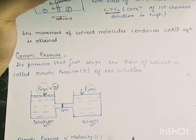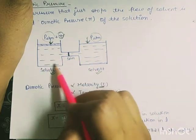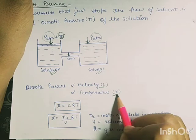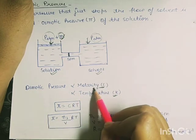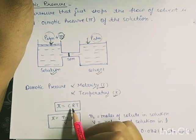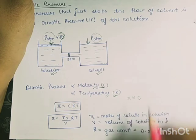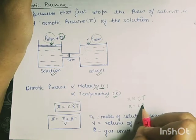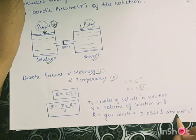Osmotic pressure depends on the concentration of the solution. Higher concentration means more pressure must be applied. Osmotic pressure is directly proportional to both concentration and temperature in Kelvin. So π = CRT, where R is the proportionality constant (the gas constant), and its value is 0.0821 litre·atmosphere per mol per Kelvin.